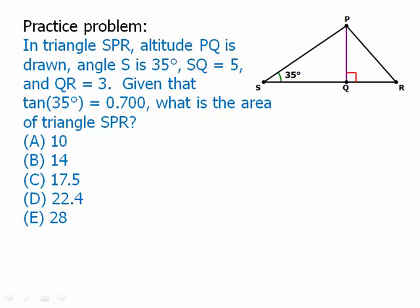Okay. So we're given an angle. We're given two lengths, SQ and QR. And we're also told that the tangent of 35 degrees is approximately 0.700. And we want to know the area of the triangle.